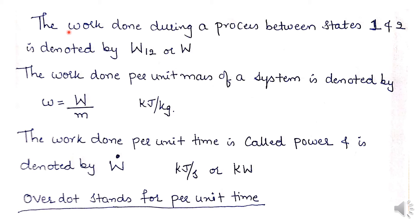Similarly, the work done during a process between states 1 and 2 is denoted by W12 or simply W. Work done per unit mass of a system is denoted by small w, with units of kJ/kg. The work done per unit time is called power, denoted by W-dot, where the dot stands for per unit time. The unit of power is kilowatts (kW).